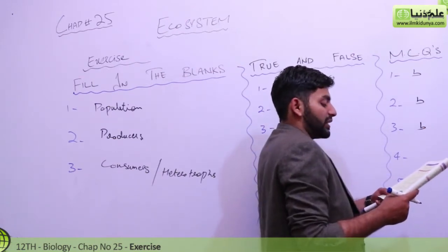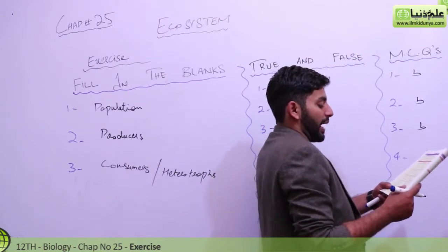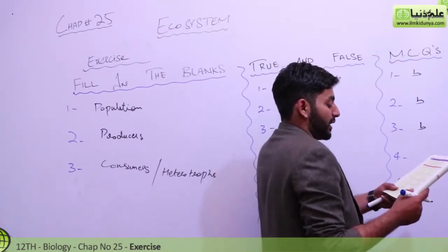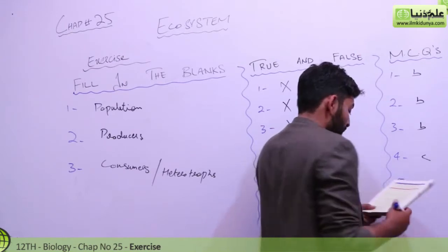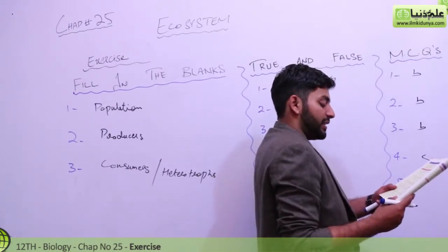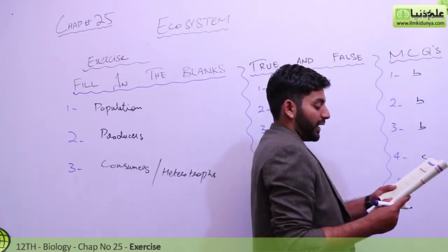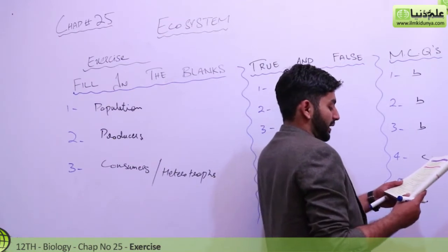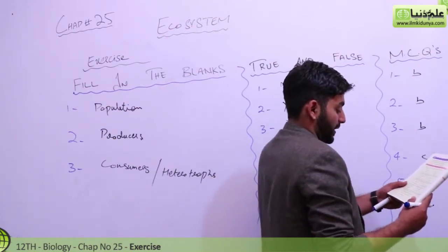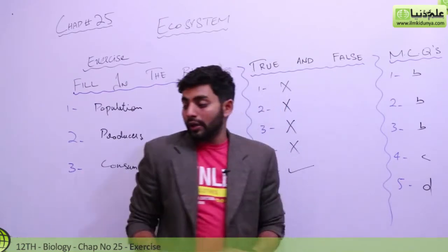Fourth one: the living organisms which can prepare their own food are predators, parasites, producers or prey. Producers, C. The living organisms which cannot prepare their own food but obtain ready-made food from others are called consumers. Okay, this is the last one, D.